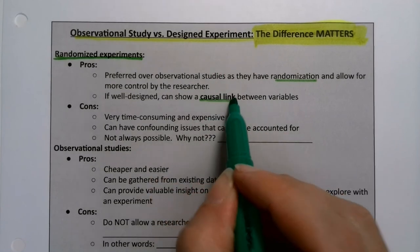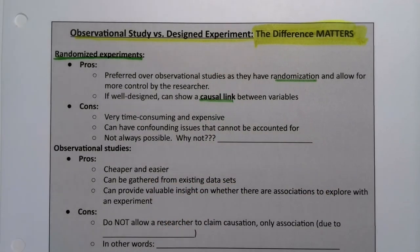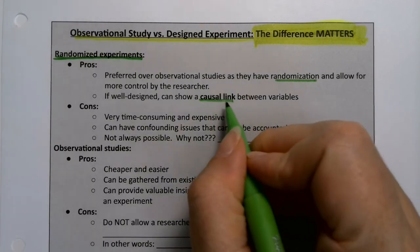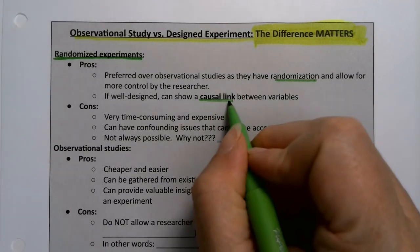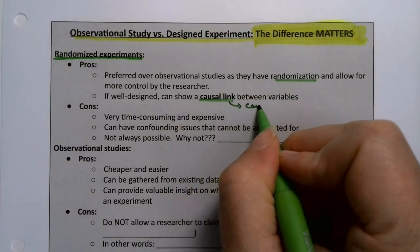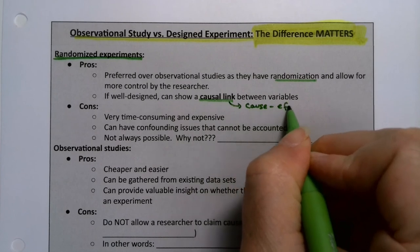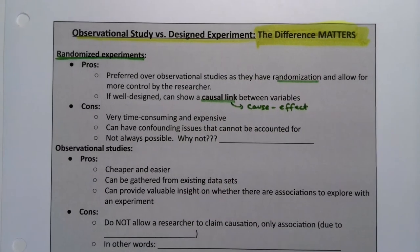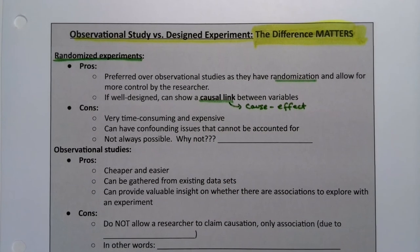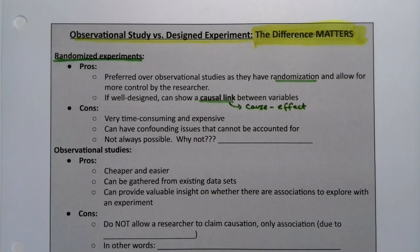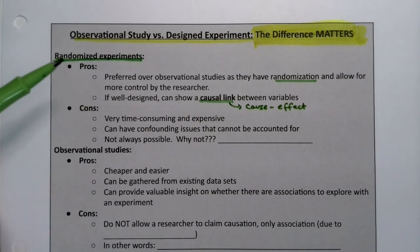A link means things are connected. Causal means cause and effect. So a causal link means cause and effect, which is the gold standard. For example, I would like to show that this drug lowers hypertension — you can only get that kind of statement from a randomized experiment.